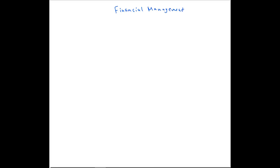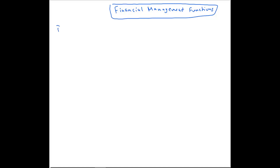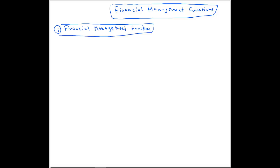Now let's do a quick summary of the section which is financial management functions. This is the first section of your syllabus. In this particular section there are four areas that you should know. The first area is the financial management function.